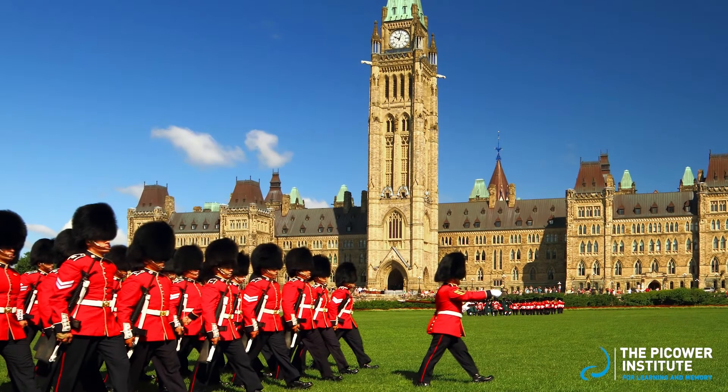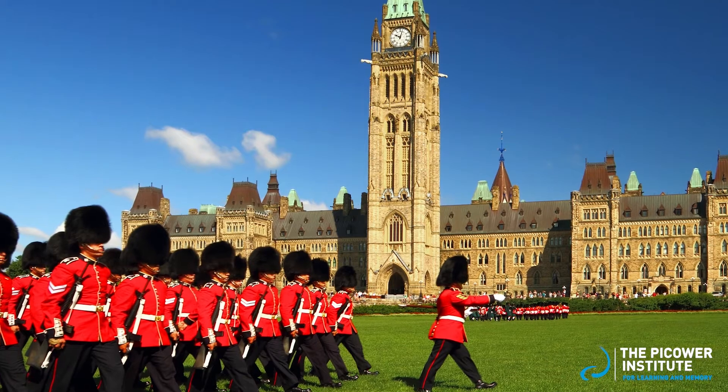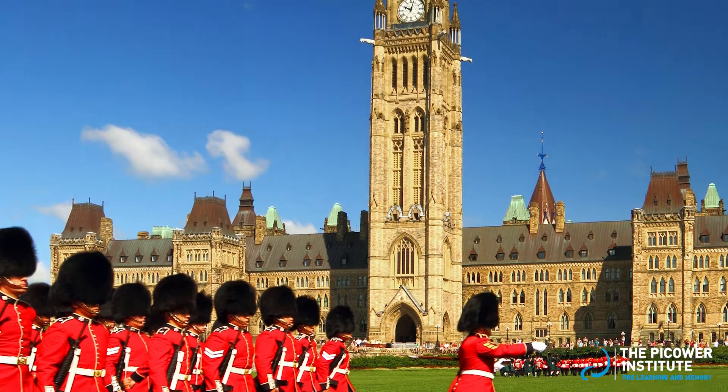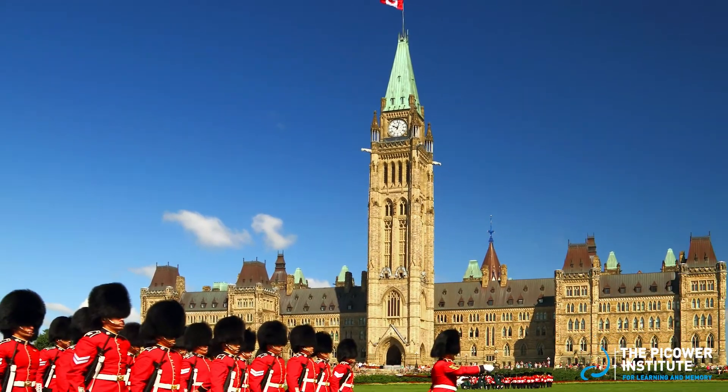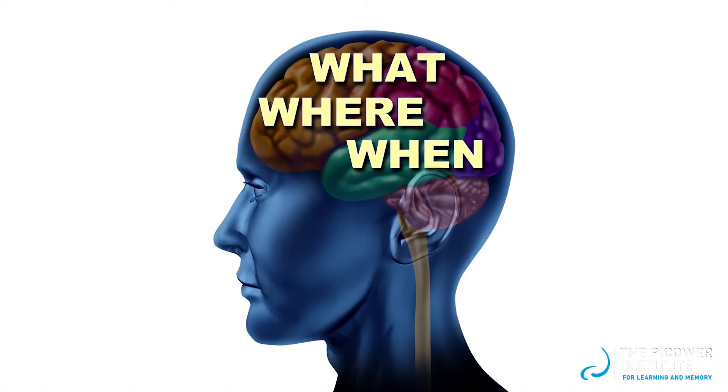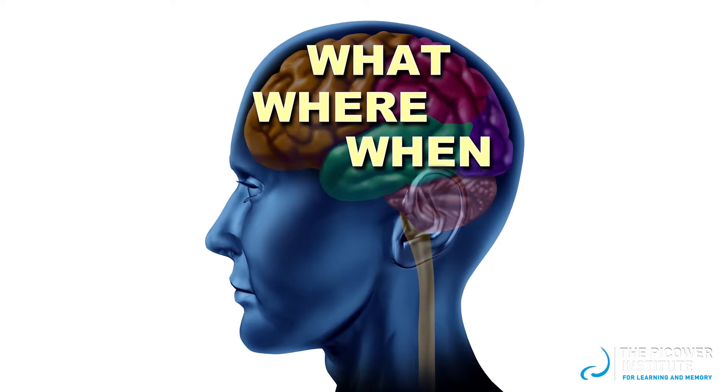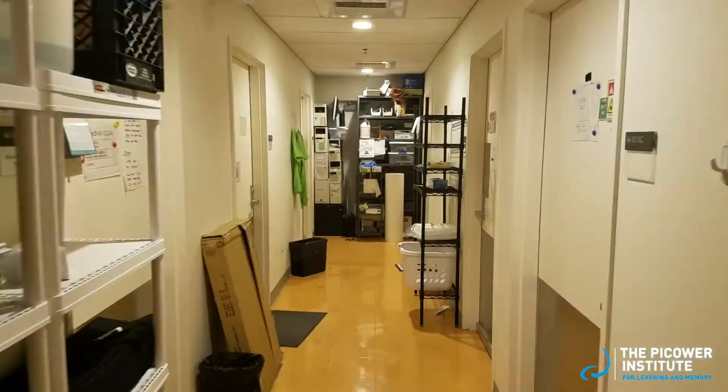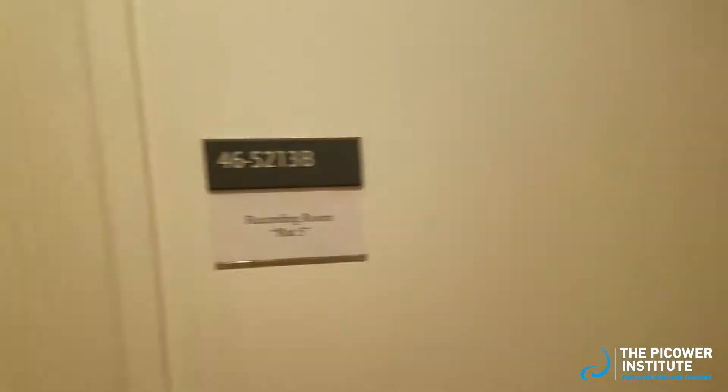In people, the hippocampus is necessary for episodic memories. Episodic memories contain what the experience was, when it happened, and where it was. The hippocampus receives all the information from our senses and all the emotional information about how we felt, and binds it together as a memory. Let's go into my experimental space to see how we study the hippocampus and how it interacts with other brain circuits.